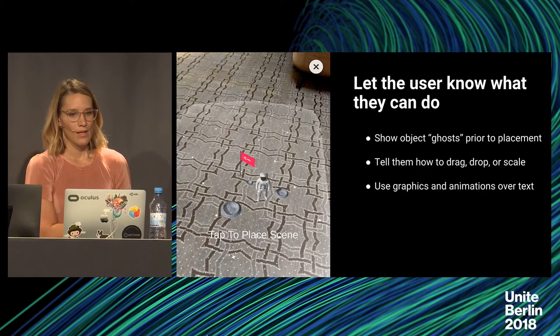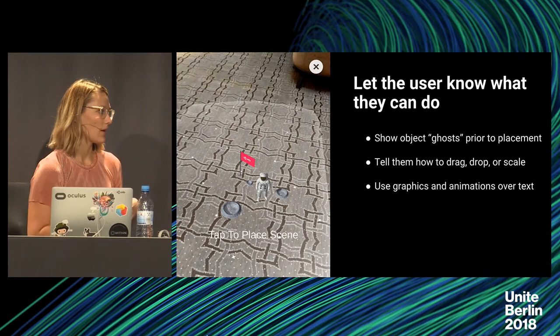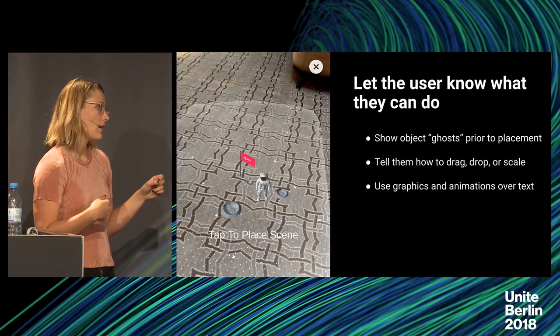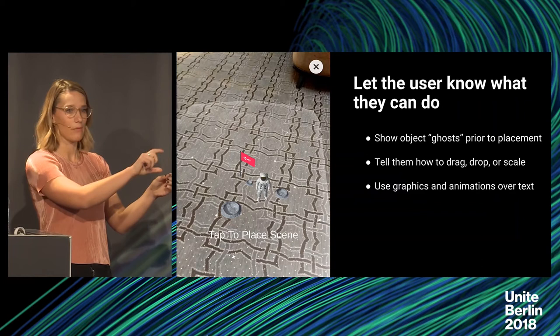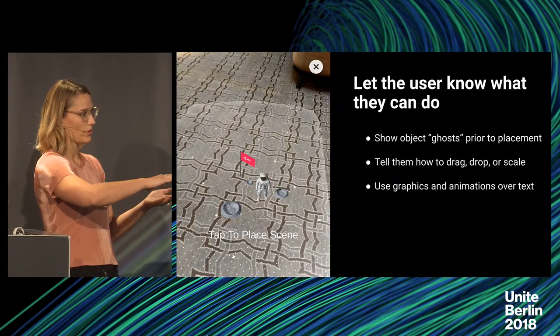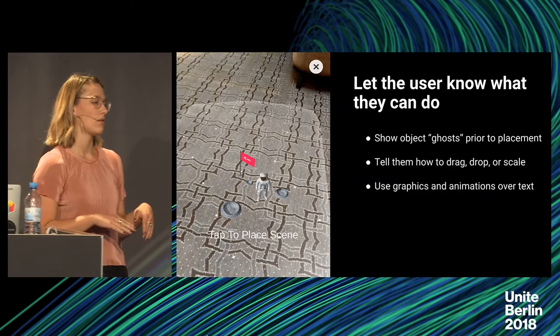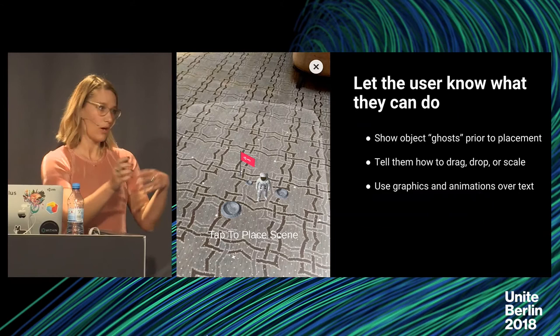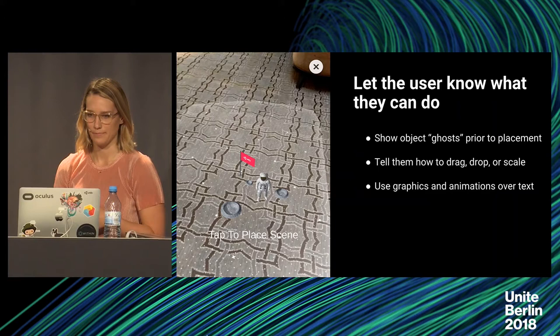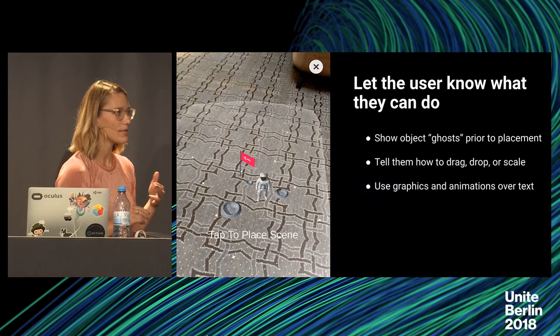Let users know what they can do. It's helpful to show objects ghosted onto planes before placing them. As you're scanning, once you've found some planes, show your object appearing on them before the user taps to place it. If you have multiple planes, they can figure out: do I want to place it here or here? Once you tap, it's attached to that plane. And tell them how to do this — how do I drag, drop, scale? It might not be intuitive because they're in a new environment.